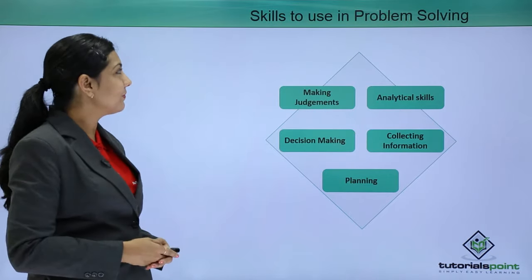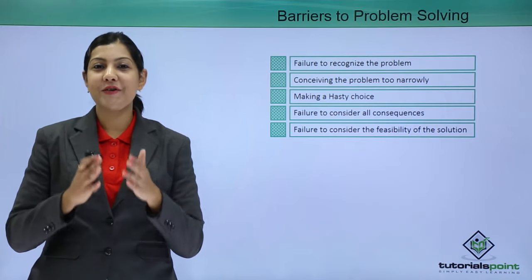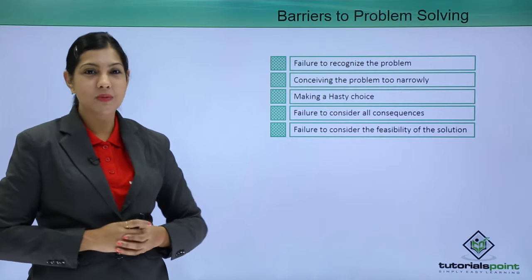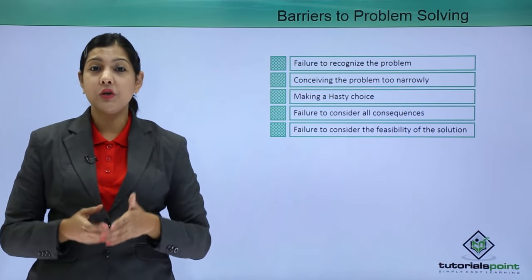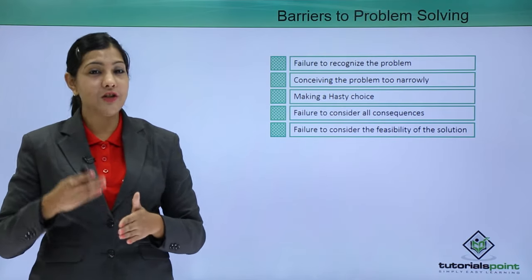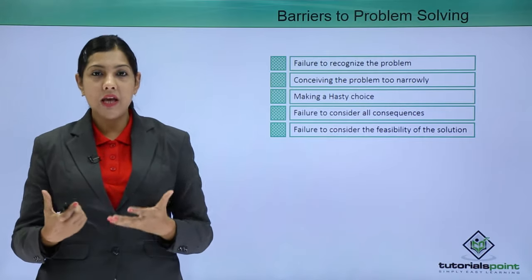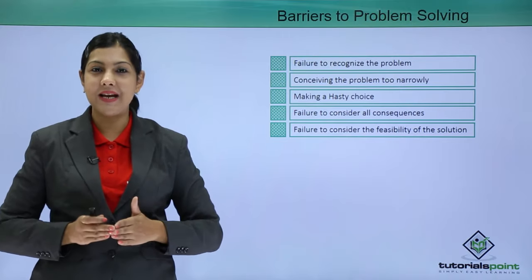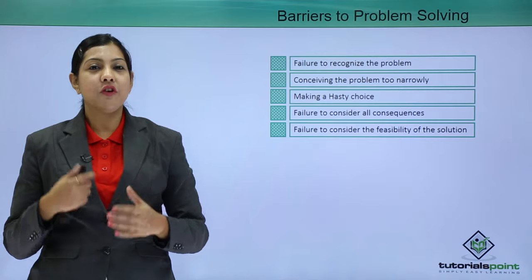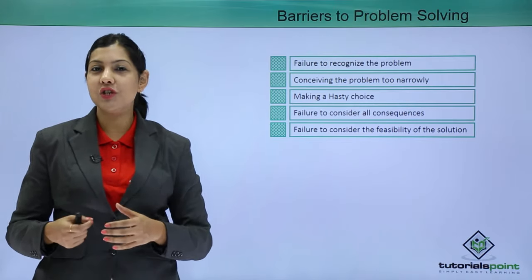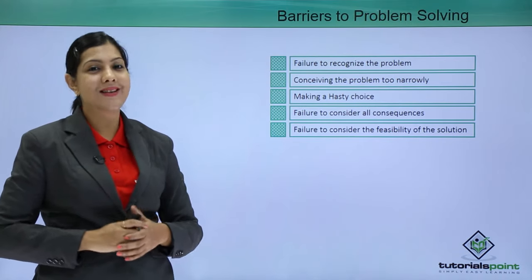Nothing is a smooth cakewalk in this world, so wherever problems exist, barriers or obstacles will also be there. The first barrier to problem-solving is failure to recognize the problem — a person might live in complete delusion that there is no problem, so you must first accept that one exists. The second barrier is conceiving the problem too narrowly — we need to think in a flexible, adaptable, open-minded way. The third barrier is making a hasty choice — we quickly seek the most immediate solution without pondering it, and later regret those hasty decisions.